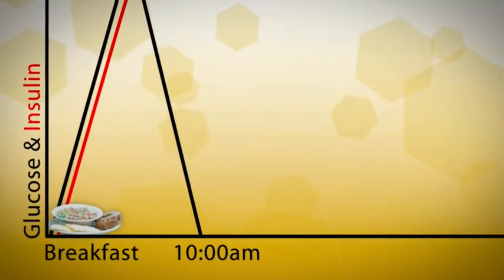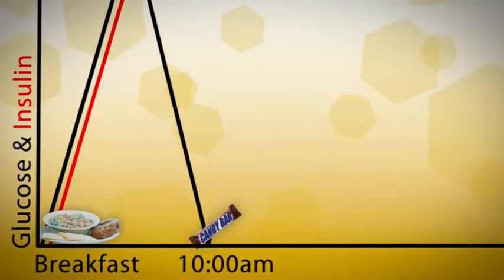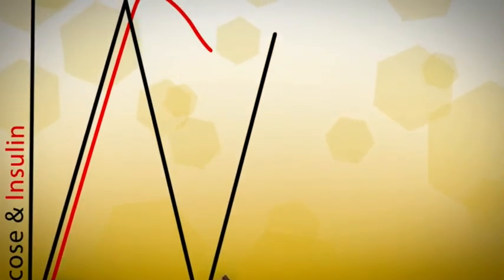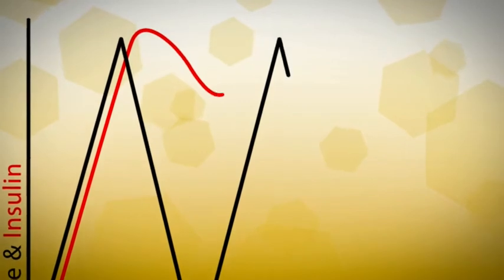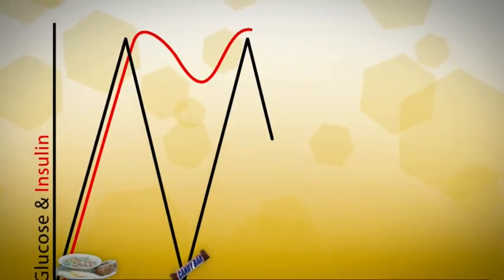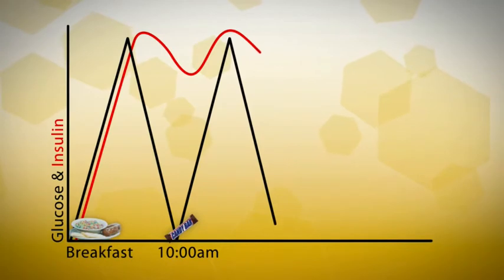On come the cravings, the irritability, and so we eat. Our glucose levels spike right back up, our body releases even more insulin, the doors open, the cells are once again fed, and excess glucose is put into our fat cells.